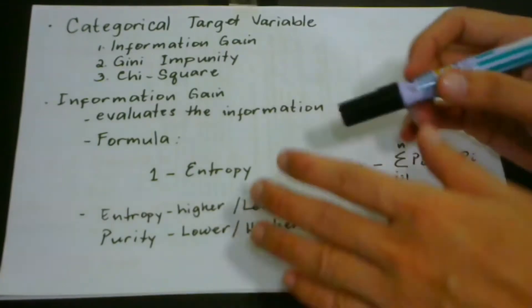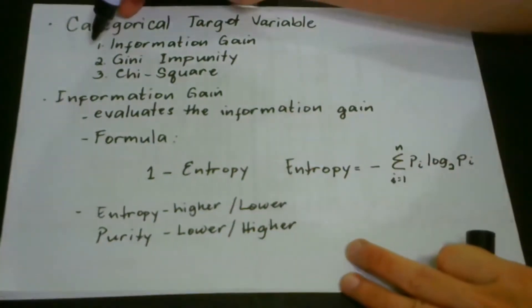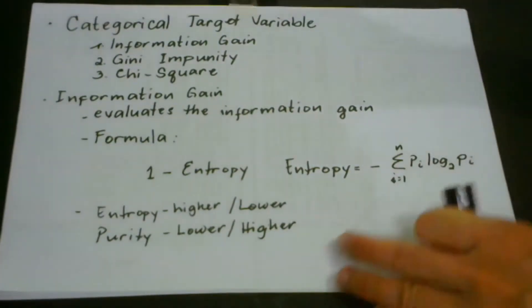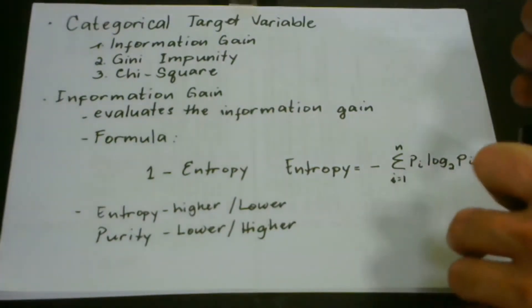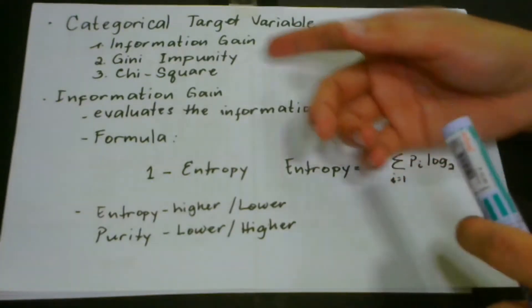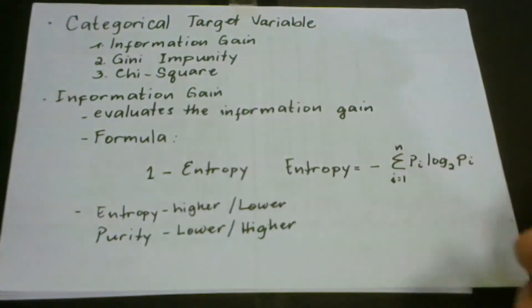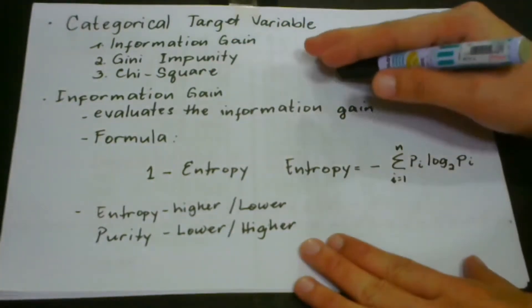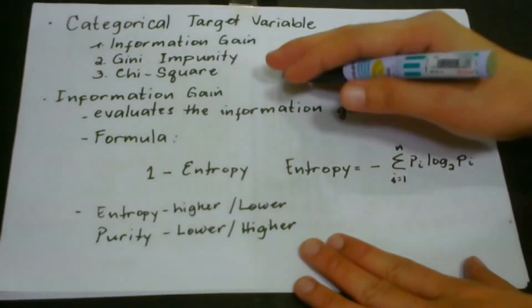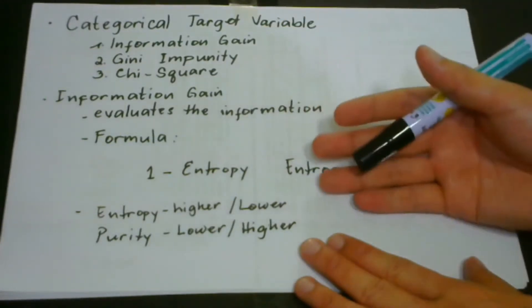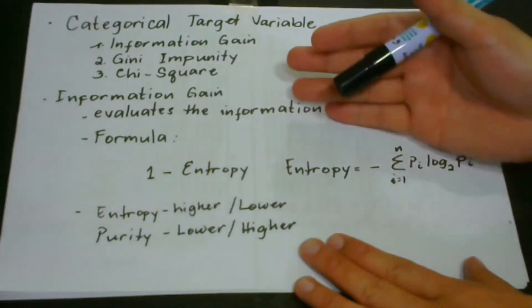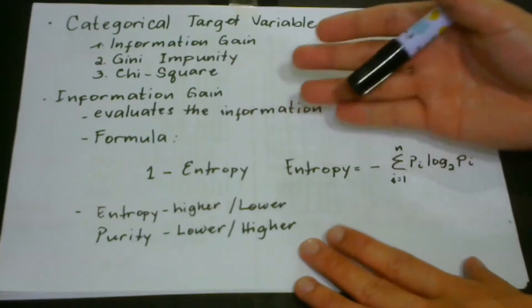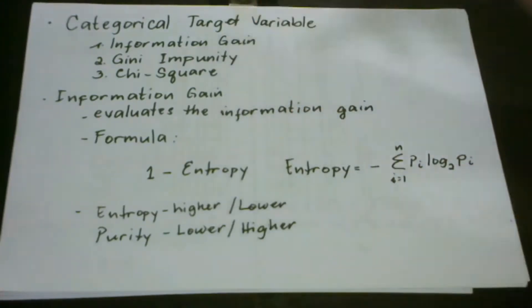As of this moment, we will just focus on information gain. In our next lesson, we will cover Gini impurity, and then chi-square. We're going to take them one by one so that we would be able to properly digest and understand each one of them. So what is information gain?